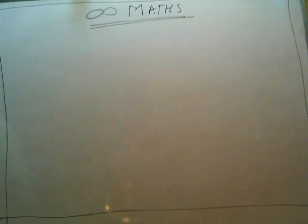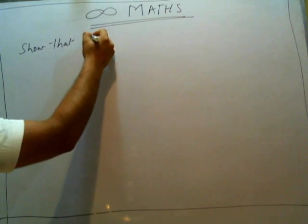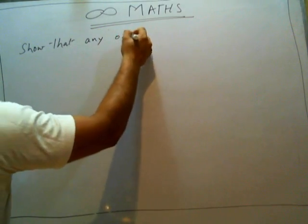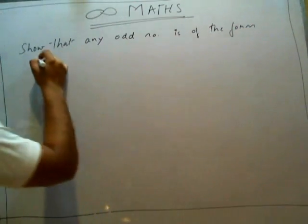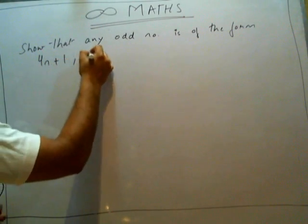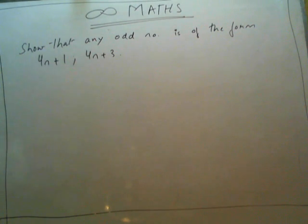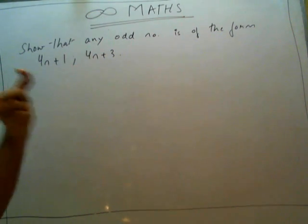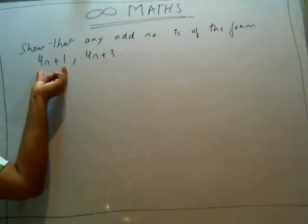For example, show that any odd number is of the form 4N+1 or 4N+3. Here, the person who asks you this question wants to tell you that if you see any odd number and divide it by 4, then that number, if it belongs to the odd category, would be among the form 4N+1 or 4N+3.